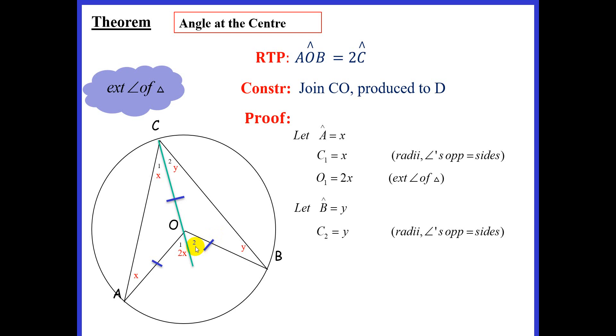In the same way, angle O2 would give us Y plus Y, which is 2Y. And the reason there is radii, angles opposite equal sides. So we end up now with angle O2 equal to Y plus Y, giving us 2Y.